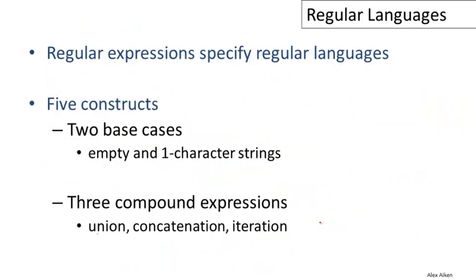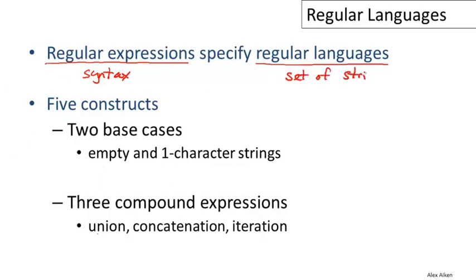We've come to the end of this video. To summarize: we looked at regular expressions, which are used to define regular languages. The regular expressions are syntax — the expression we write down — and they denote a set of strings, which is the regular language. There are five kinds of regular expressions: an expression for the empty string (epsilon), all one-character strings, and three compound expressions — union, concatenation, and iteration — for building new regular expressions from other regular expressions.